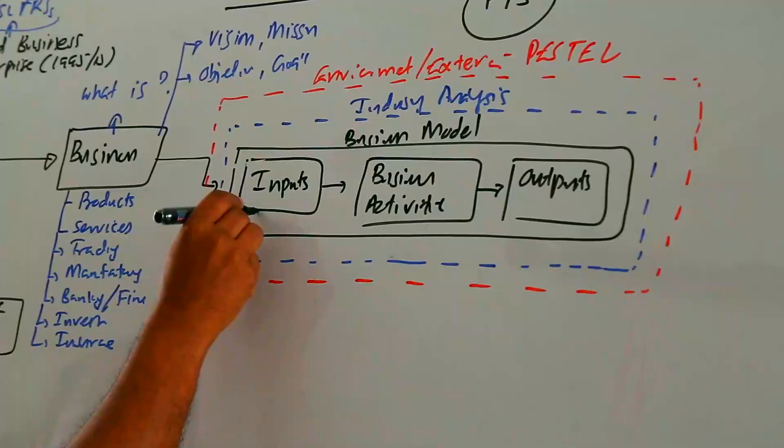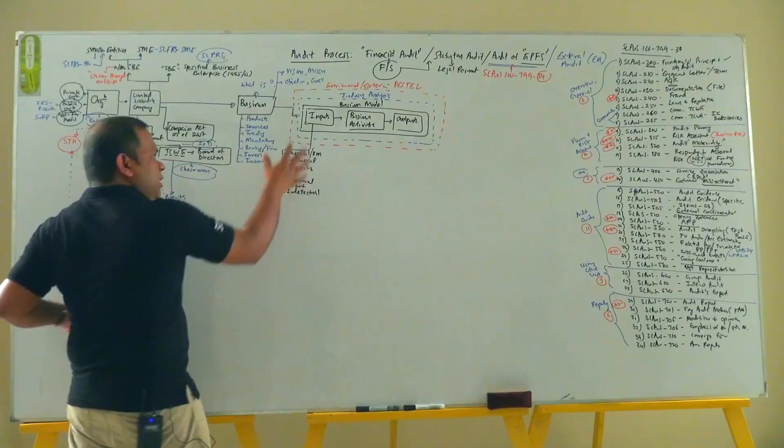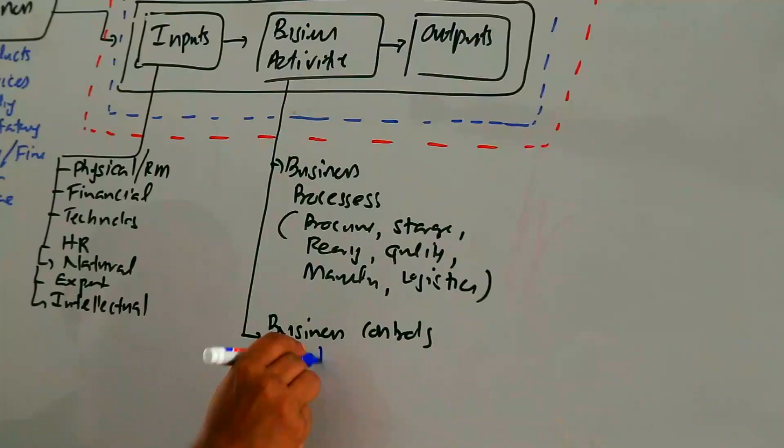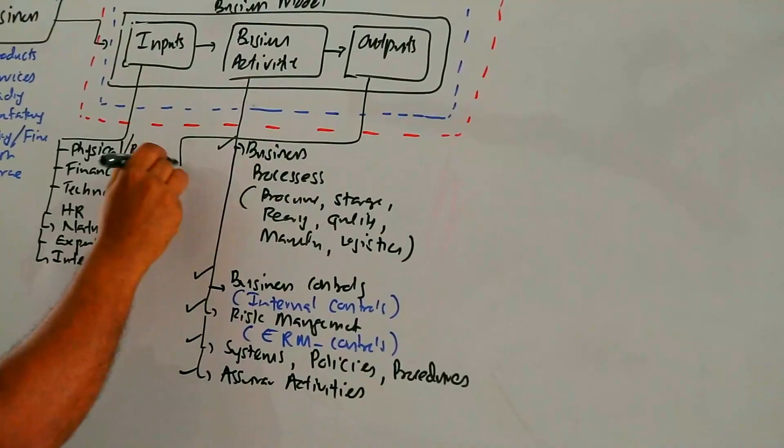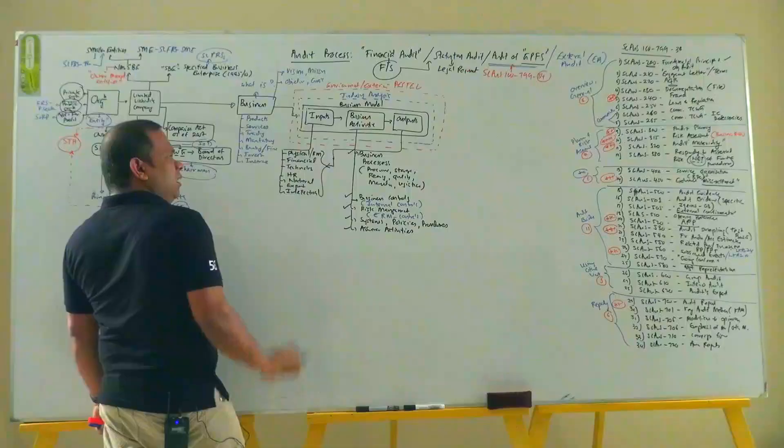Inputs to the organization. There can be many types of inputs. Output will be like this: the output will be either the physical output, the financial output, technology output, whatever, intellectual output.